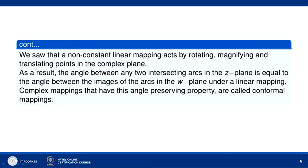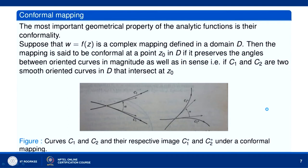Complex mappings that have this angle-preserving property are called conformal mappings. The most important geometrical property of analytic functions is their conformality. The mapping w = f(z) is called conformal at a point z₀ in domain D if it preserves the angles between oriented curves in magnitude as well as in sense.